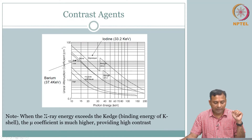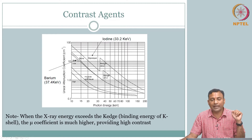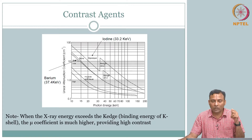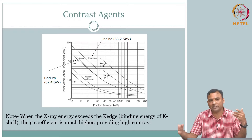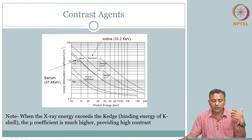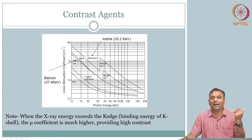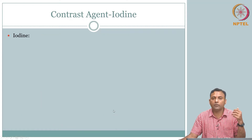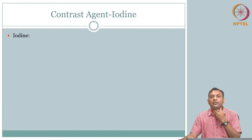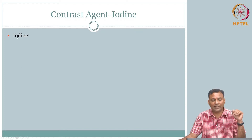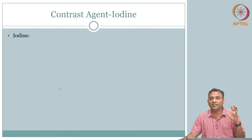When the x-ray energy exceeds the K shell binding energy — that is why it is called the K edge — mu, the attenuation coefficient, is much higher, providing high contrast. So we can maximize inherent contrast. In some sense this is not purely instrumentation, but it is part of instrumentation because you have to choose your energy levels and choose the compound carefully to maximize the inherent contrast.